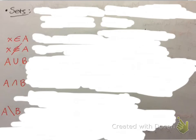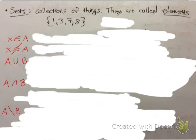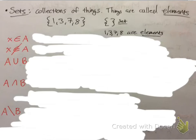First we're going to go over what these symbols in red mean, but first we need to identify a few things. So, sets. Sets are a collection of things, and what's in them are called elements. For example, if you have the set of 1, 3, 7, and 8, the bracket notation is the set, and what's in it — the numbers — are the elements: 1, 3, 7, and 8.